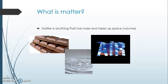Before we can classify matter, we have to define it. Matter is anything that has mass and takes up space — it has volume. Three examples: chocolate is a solid form of matter, water is a liquid form of matter, and air is a gas form of matter.